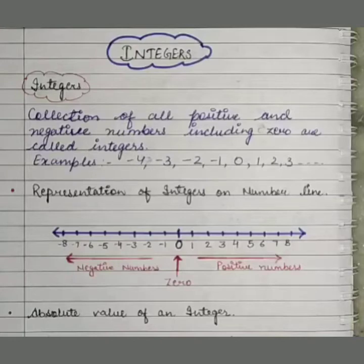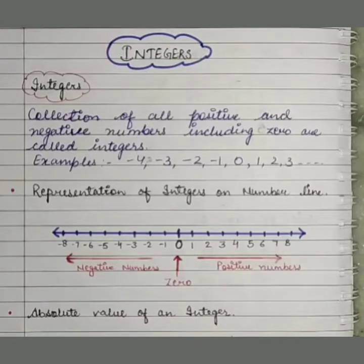Integers. What are integers? Before starting this, what are whole numbers? Whole numbers means natural numbers with 0. Collection of natural numbers with 0 are whole numbers.